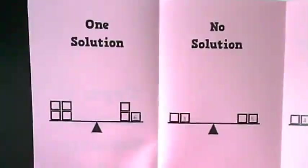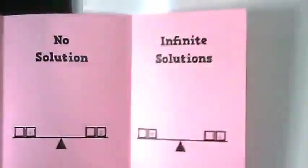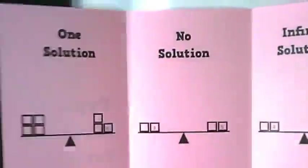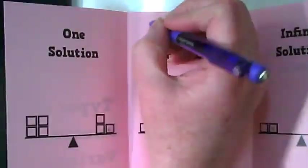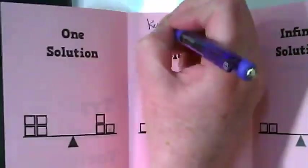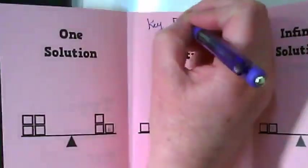You will see there are three types of solutions. There is one solution, no solution, or infinite solutions. I would like us to put a key at the top in the middle. A box equals an X.